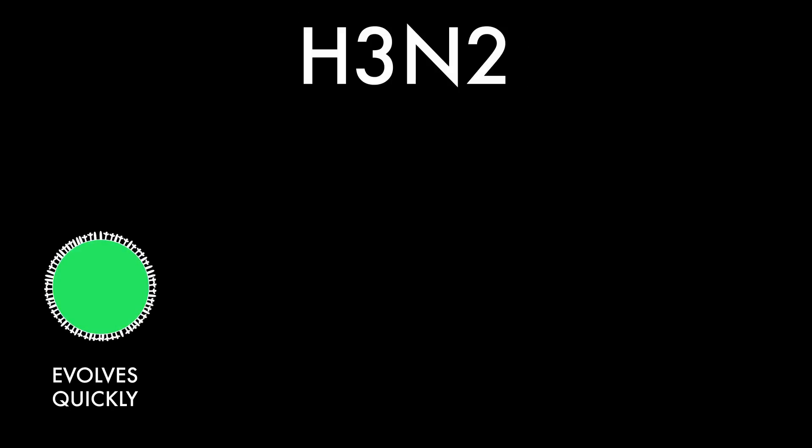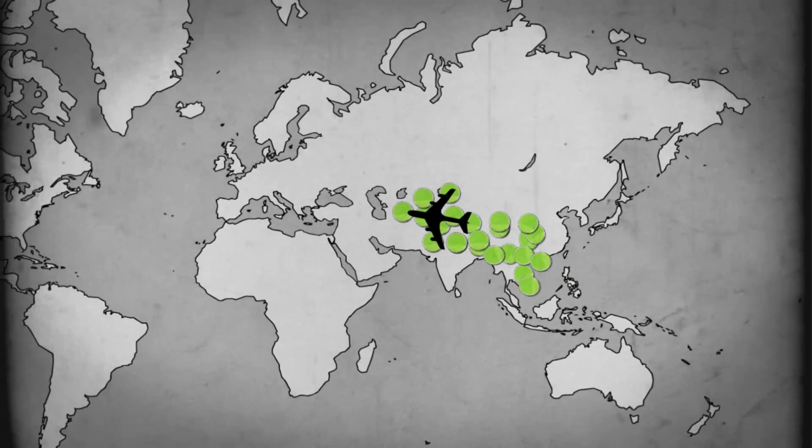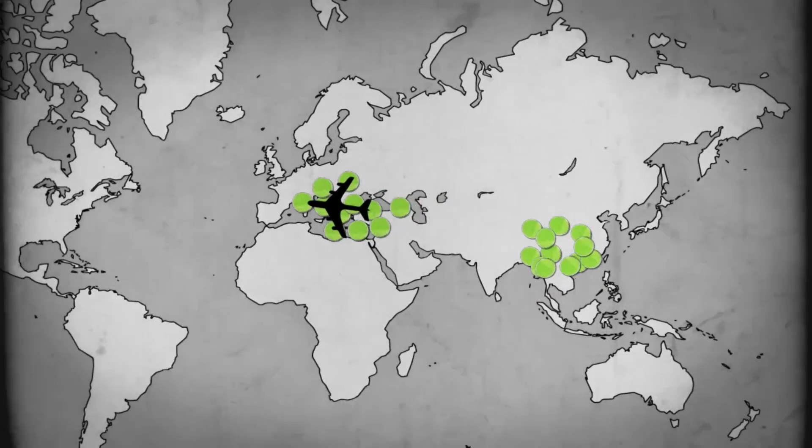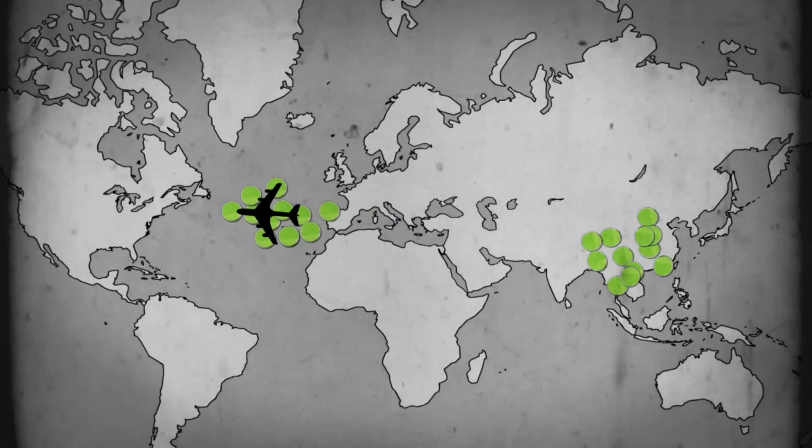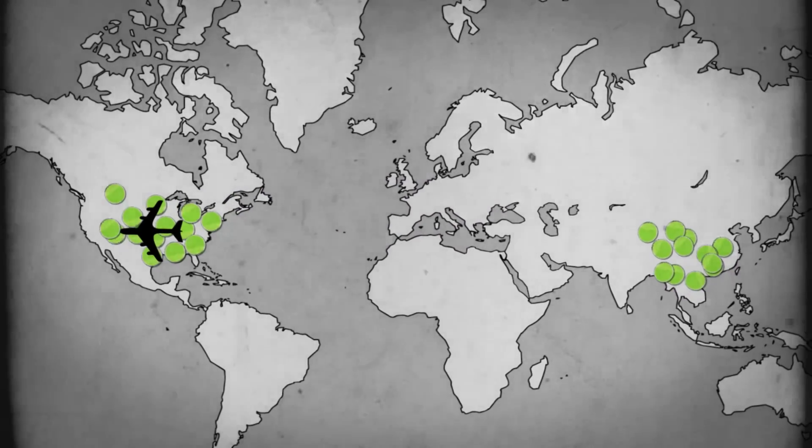H3N2 evolves more quickly, infects more adults, and hitches a ride with them all over the world. Trevor's data showed H3N2 often migrates from Southeast Asia, where flu circulates all year long. It heads to North America, where it deplanes, outcompetes local strains, and takes over.